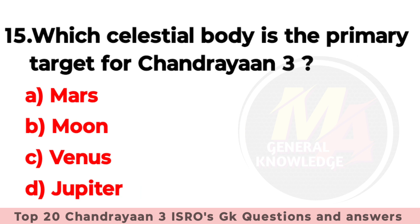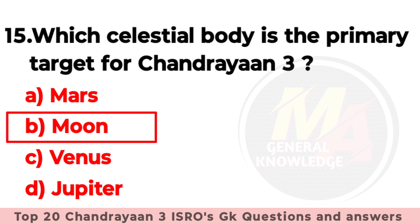Q15: Which celestial body is the primary target for Chandrayaan-3? The right option is option number B — Moon.